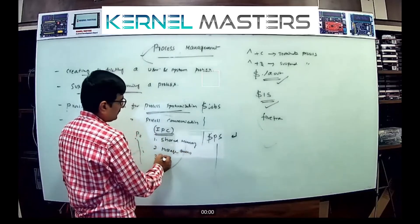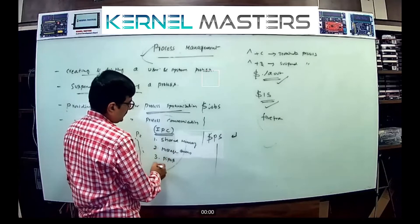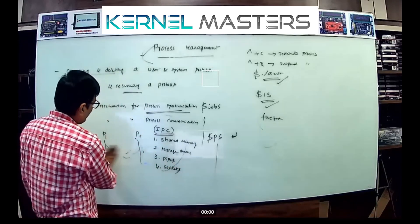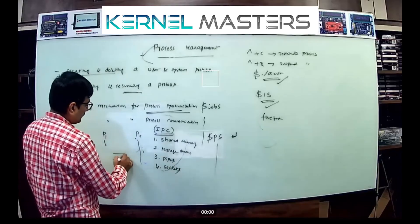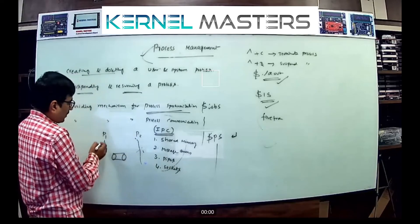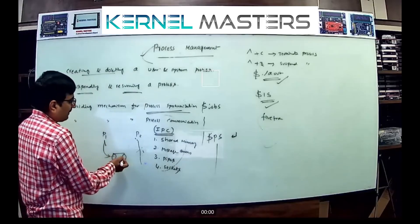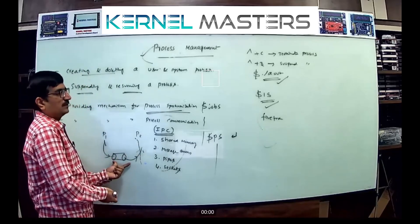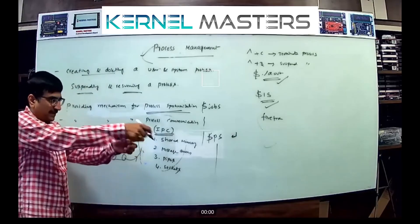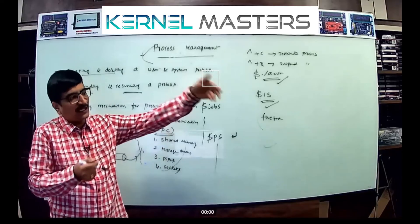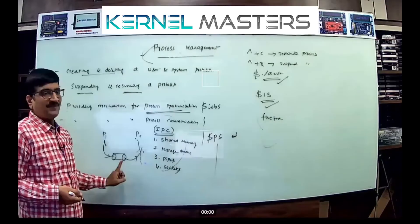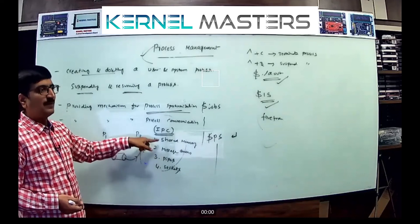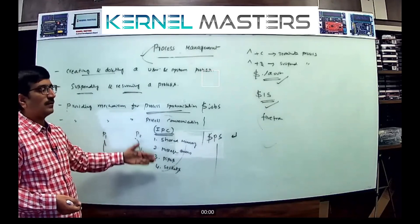One IPC mechanism is a pipe. The pipe acts as a communication medium between two programs — process one writes to one side of the pipe, and process two reads from the other side. So pipe, message passing, shared memory, and socket — four methods are available for one process to communicate with another.